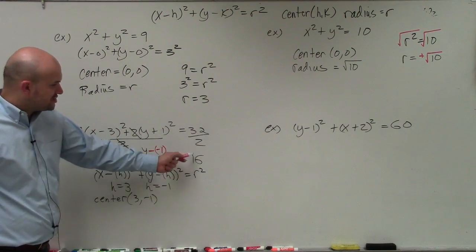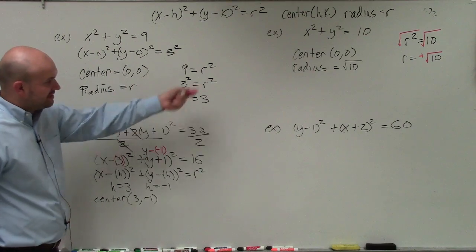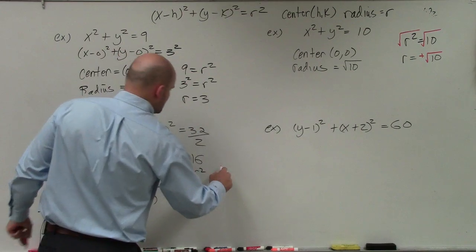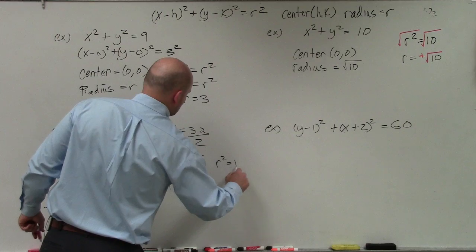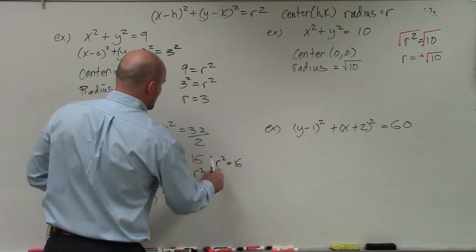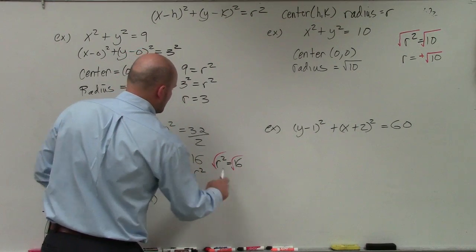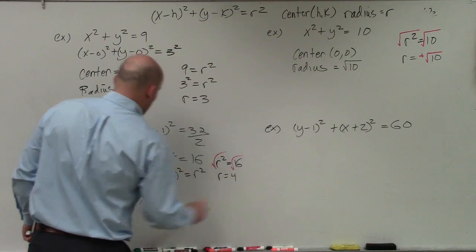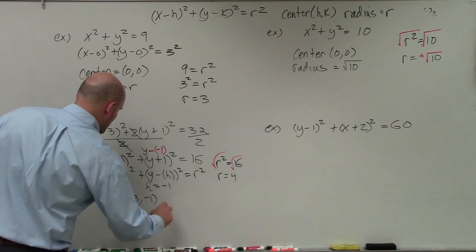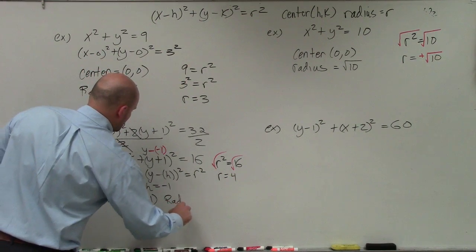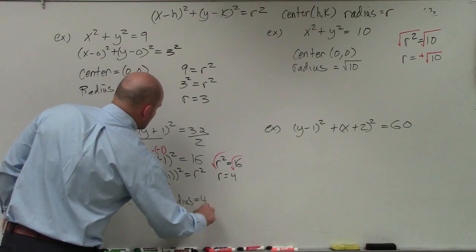Now to find the radius, we notice that r squared is equal to 16. I'll say r squared equals 16. I'll take the square root of both sides, and I can say r is equal to 4. So my radius is equal to 4.